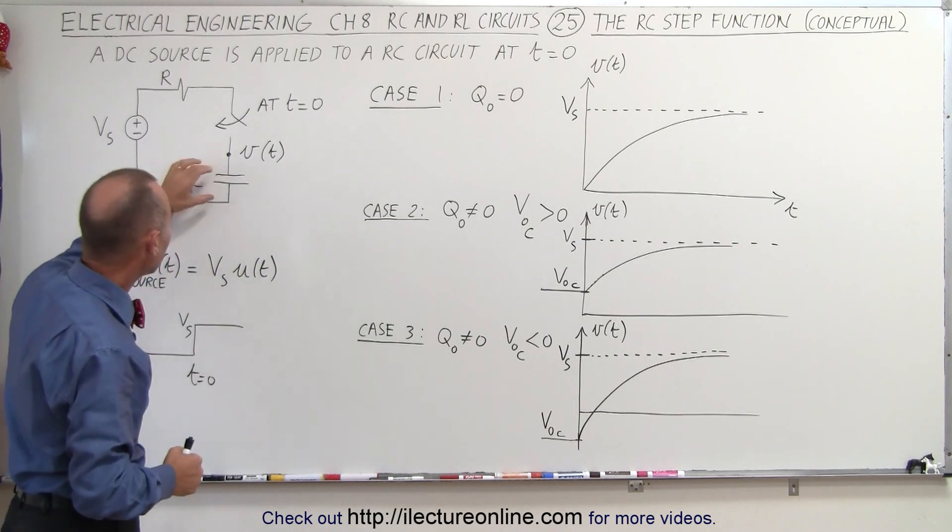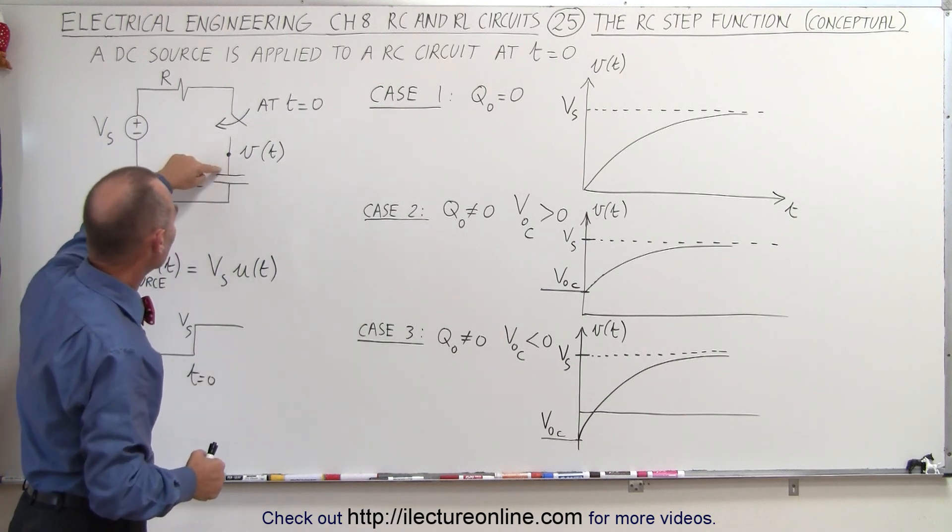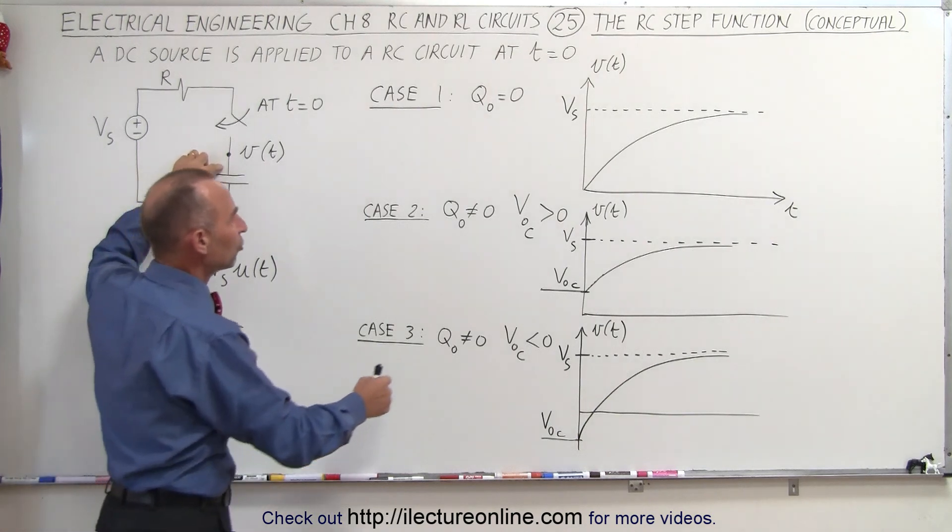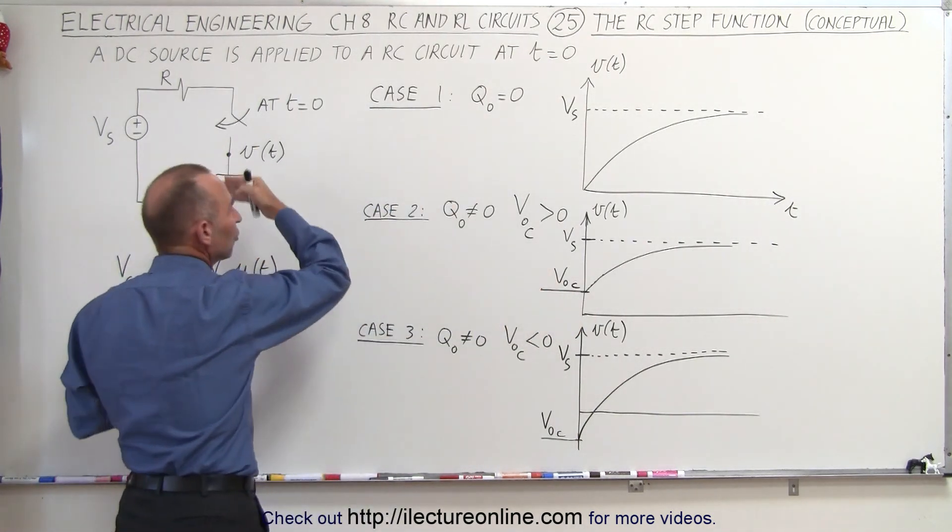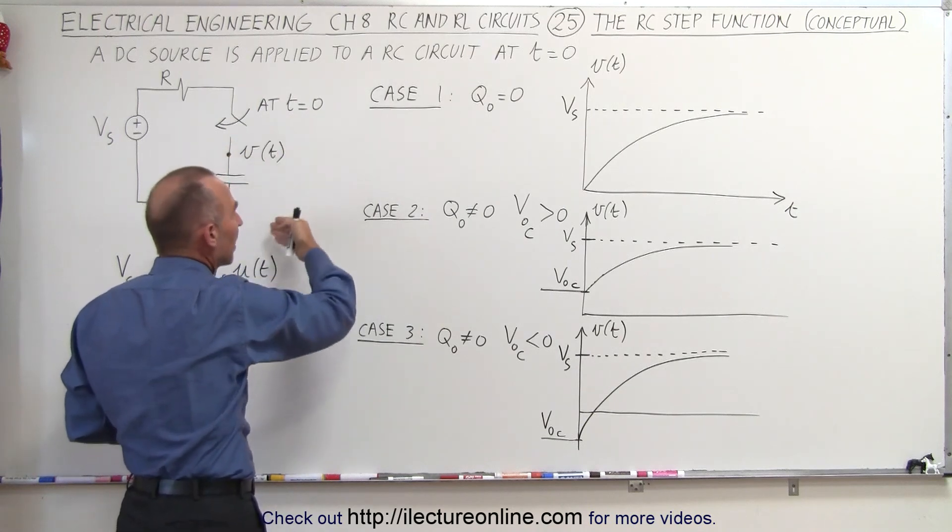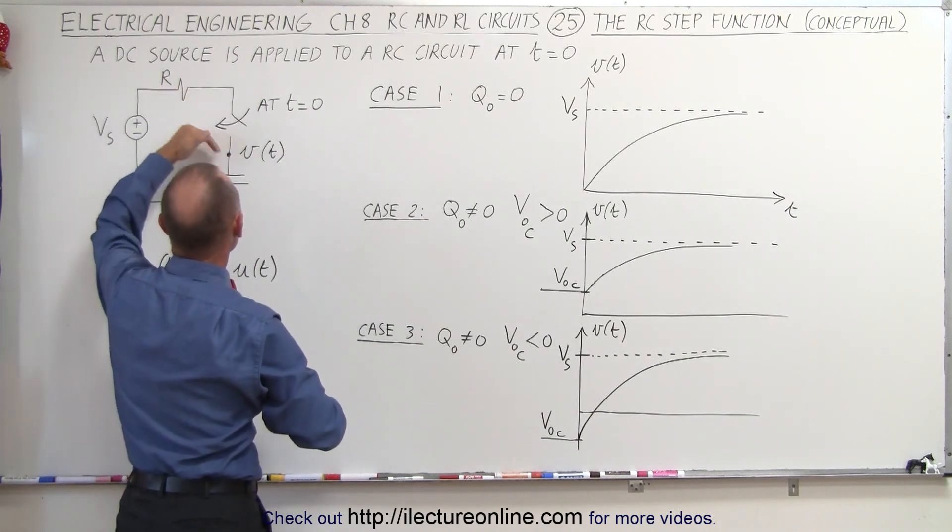Second case is there's already some charge on the capacitor, some positive charges over here, negative charges here, so we have some initial voltage across the capacitor at time equals zero. Then when the switch is closed, additional charge will be piled on the capacitor, driven there by the source,